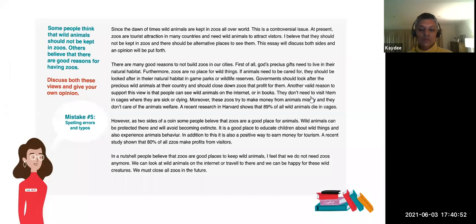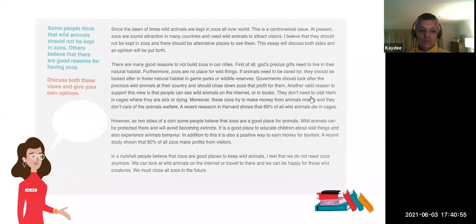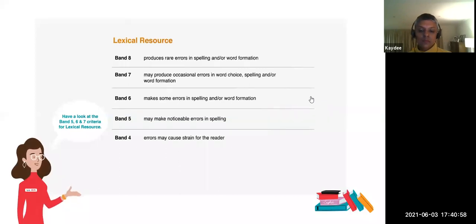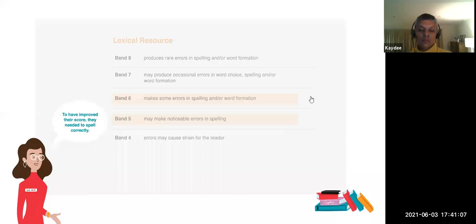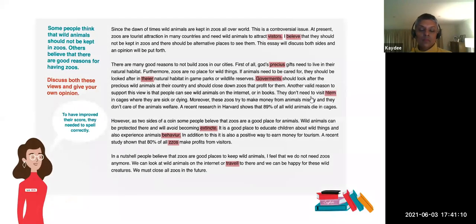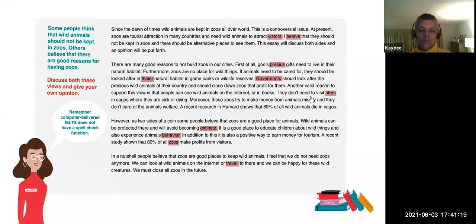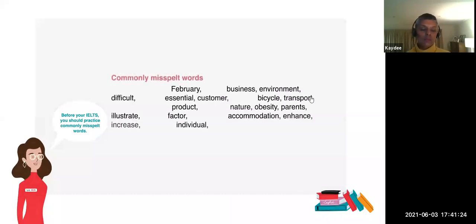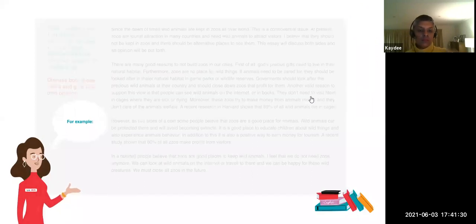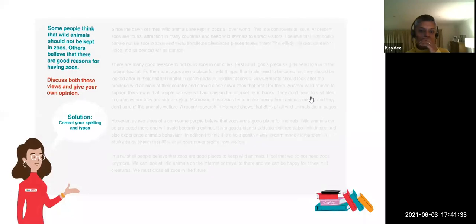Mistake five: spelling errors and typos. The writer of this task would have scored between a band five and a band six for lexical resource. To improve their score, they needed to spell correctly. Remember that a typo is a spelling error, and computer-delivered IELTS does not have a spell check function. Before your IELTS, you should practice commonly misspelled words. Solution: correct your spelling and typos.